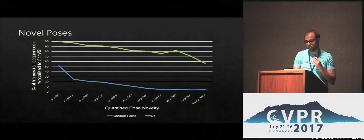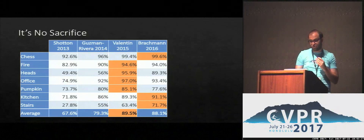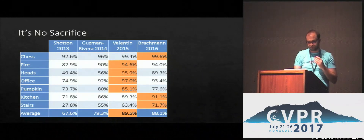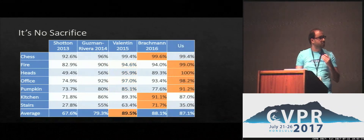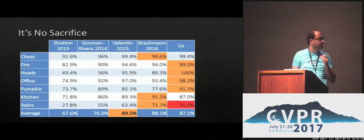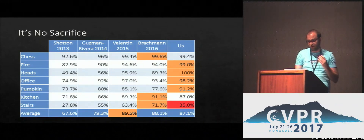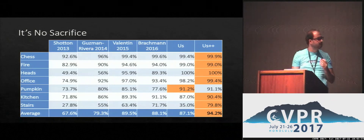How does our method compare in accuracy to the original SCORE method, which was trained offline? In this table we see the percentages of test frames relocalized correctly by existing SCORE methods on the seven scenes dataset — the standard benchmark. Each offline method was trained offline for each scene. We've eliminated all the offline training, but as you can see, we haven't lost much accuracy. In fact, in many sequences we do better — except on the difficult stairs sequence. However, after submission, we ran more experiments and tried more parameters, and as you can see, we got much better results just by tuning the parameters.